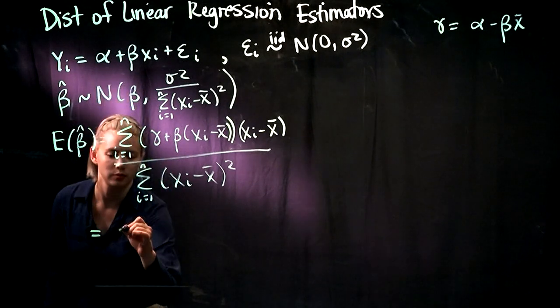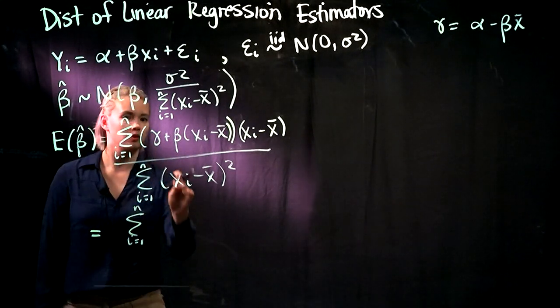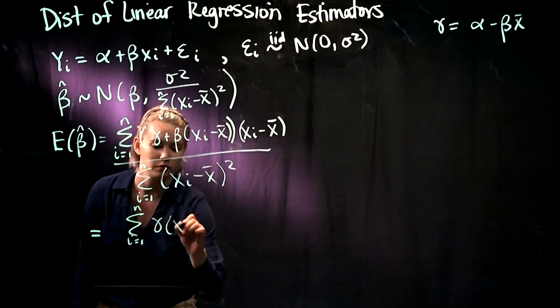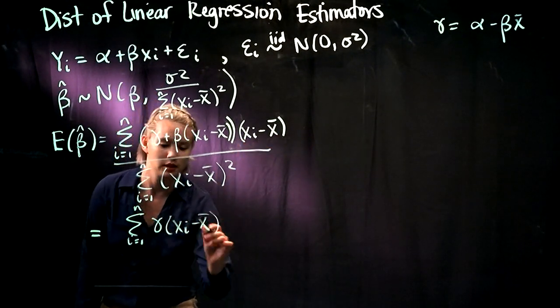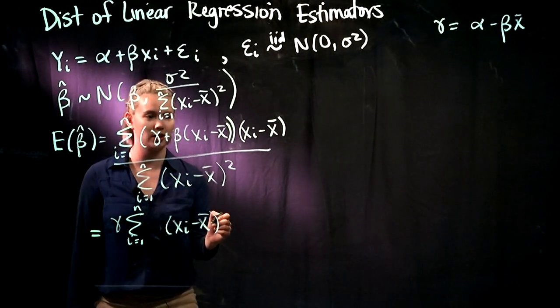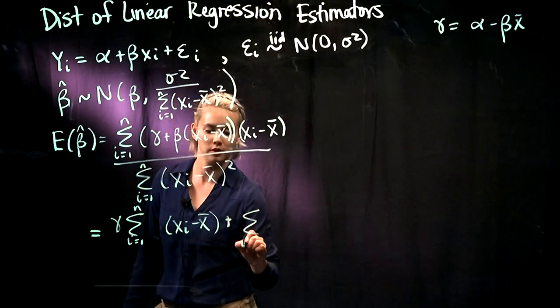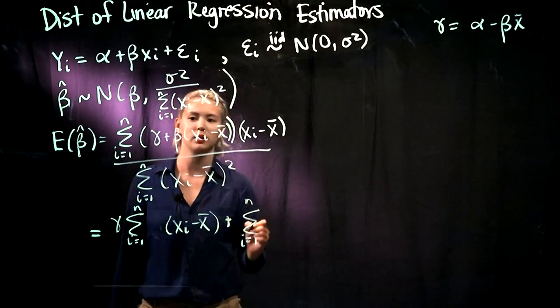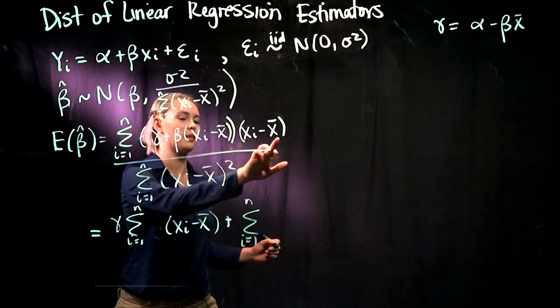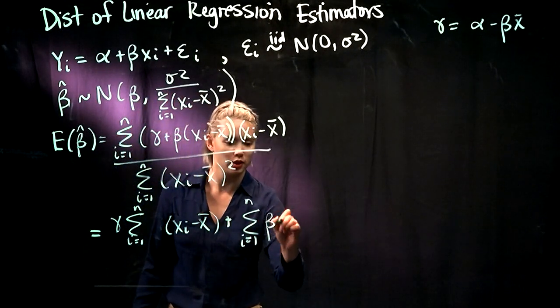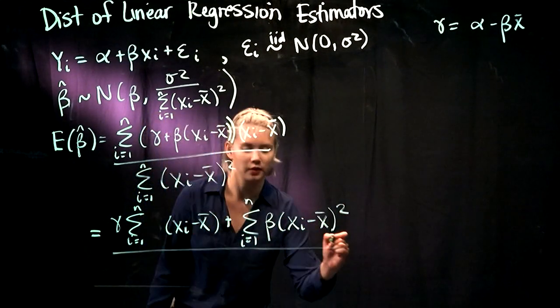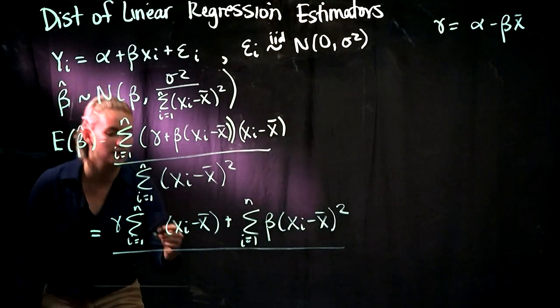So we have sum i equals 1 to n, gamma times xi minus x bar. Let's go ahead and pull gamma out of that sum, since that's just a constant. Then we also have the sum i equals 1 to n, beta times xi minus x bar times xi minus x bar. So that's beta times xi minus x bar squared. For the denominator, let's just keep that the same for now.